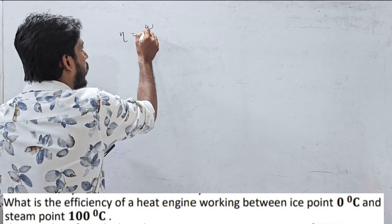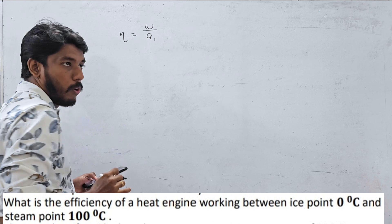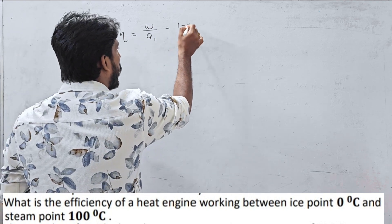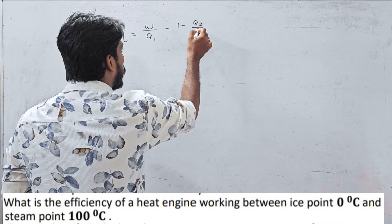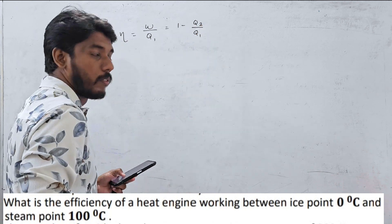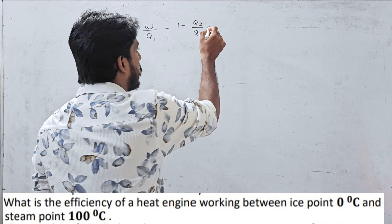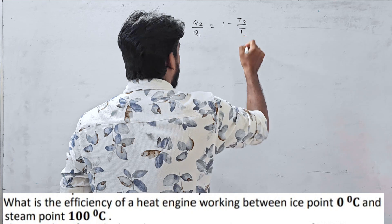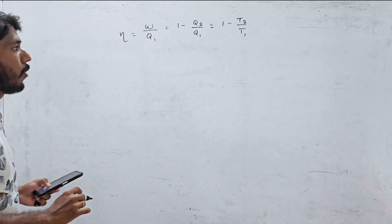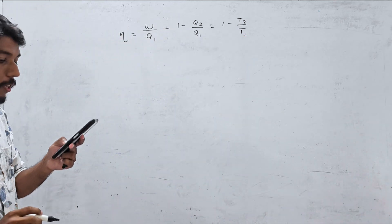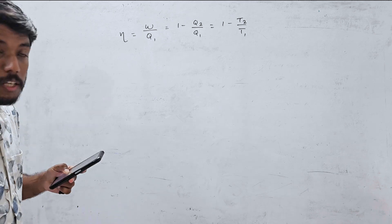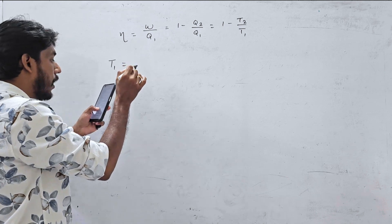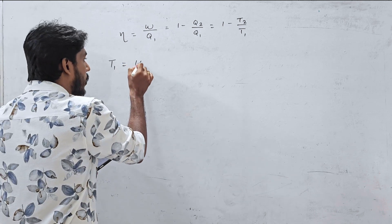The efficiency formulas are: η = W/Q1, η = 1 - Q2/Q1, and in terms of temperature, η = 1 - T2/T1. The steam point is 100°C in Celsius.